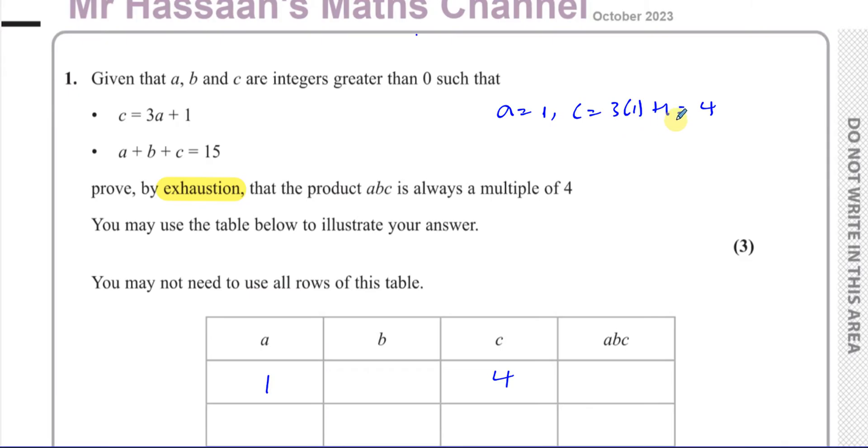And if C is 4, then B is going to be, so when A is 1 and C is 4, you're going to have 1 plus B plus 4 equals 15. So B is going to be 15 minus 5, which is 10. Now if you multiply these numbers together, you're going to get 40. And we know that 40 is 4 times 10. So this is a multiple of 4. So this is true for when A is 1.